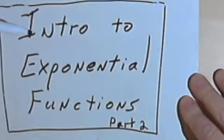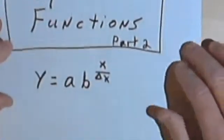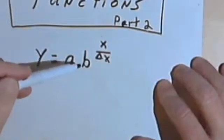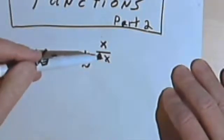This is going to be part 2 to the introduction to exponential functions. So we have this general formula, this general equation, y equals a times b raised to the x over delta x.